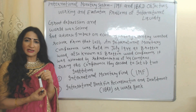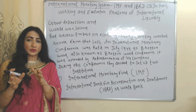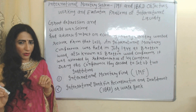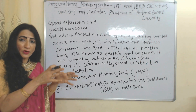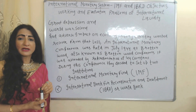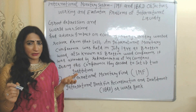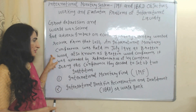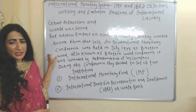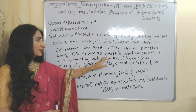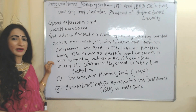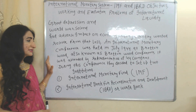Let's start. As we know, the Great Depression and World War II had an adverse impact on our economy. Every country wanted to recover from this loss. That's why an international monetary conference was held in July 1944 at Bretton Woods — also known as the Bretton Woods Conference — attended by representatives of 44 countries.